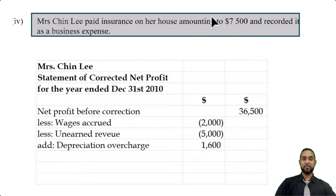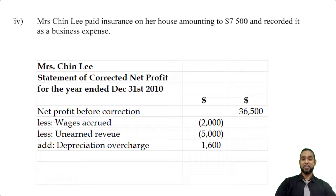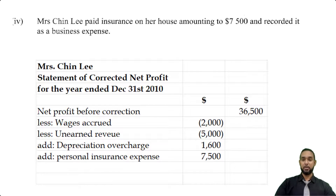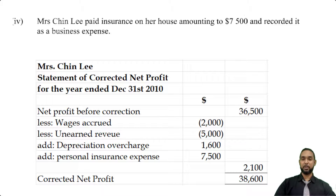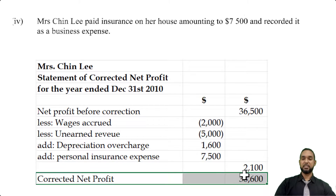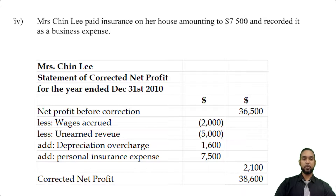Item four: Mrs. Chinlee paid insurance on her home amounting to seven thousand five hundred. She put an expense there that should not have been there, so to correct that we add back the amount taken out as the expense. The subtotal for adjustments is two thousand one hundred, which is positive, so we add that to net profit before correction. Our corrected net profit stands at thirty-eight thousand six hundred.